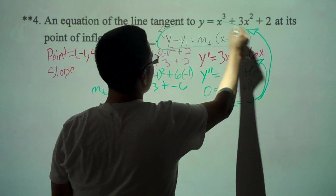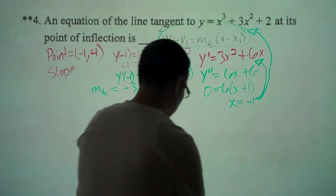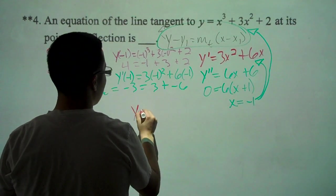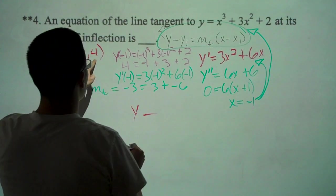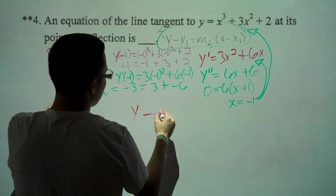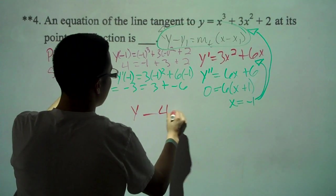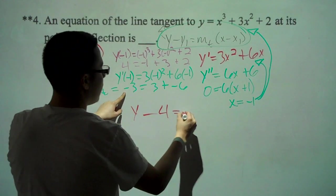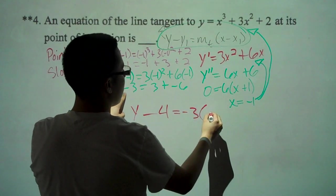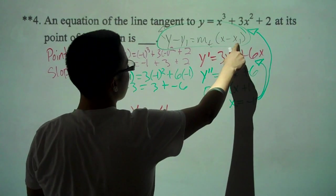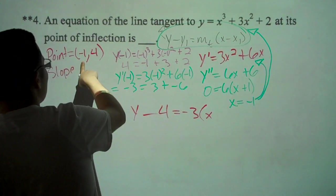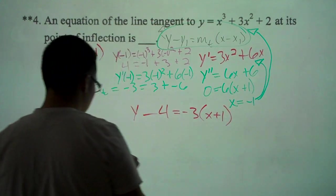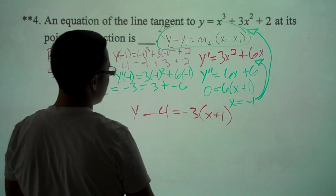So our answer is going to be y minus 4 equals negative 3 times parenthesis x minus x sub 1, but x is negative 1 so it's plus 1, and that will be our answer for our line tangent.